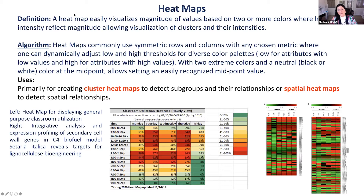A heat map easily visualizes magnitude of values based on two or more colors, where hue or intensity reflects magnitude — showing hot spots of activity, relationships, or particular attributes. Heat maps commonly use symmetric rows and columns with any chosen metric, and you can dynamically adjust low and high thresholds, choose diverse color palettes, and set a neutral midpoint — black or white. If publishing in black and white, there is a version for that too. They are primarily used for clustered heat maps, but you can also do spatial heat maps to detect spatial relationships.